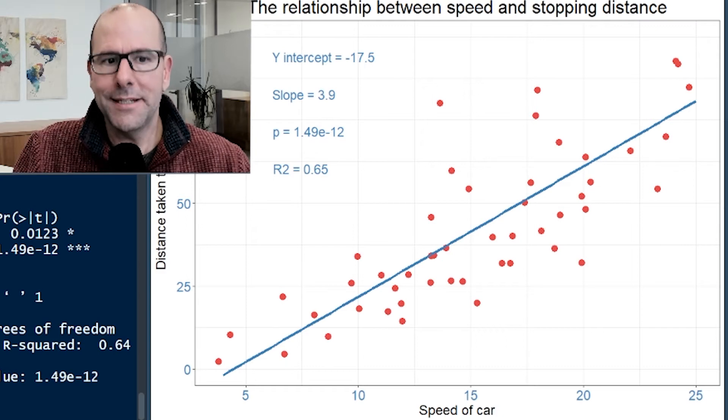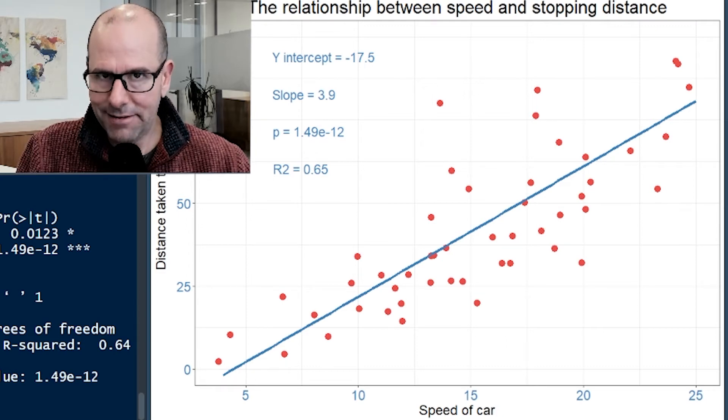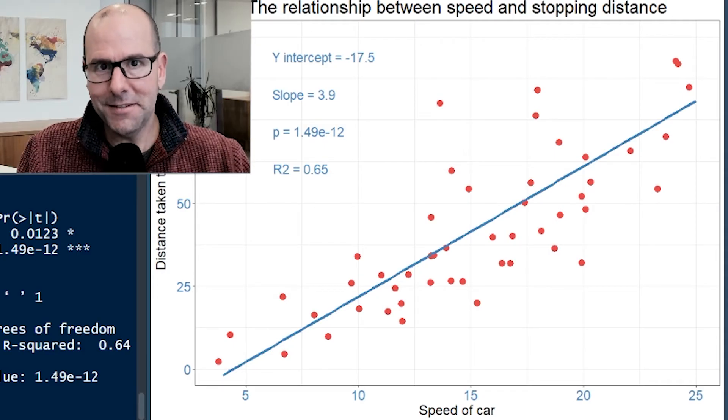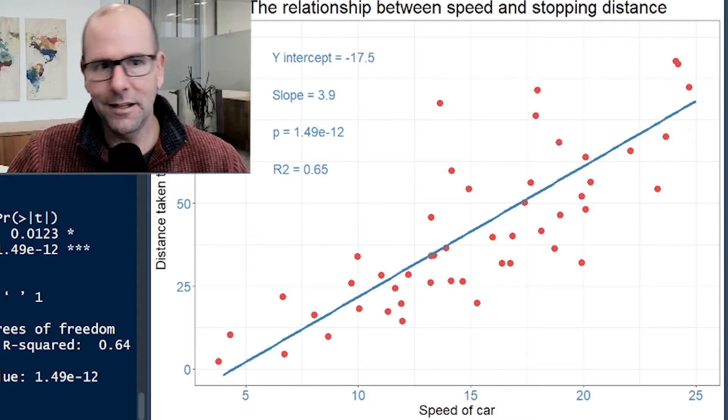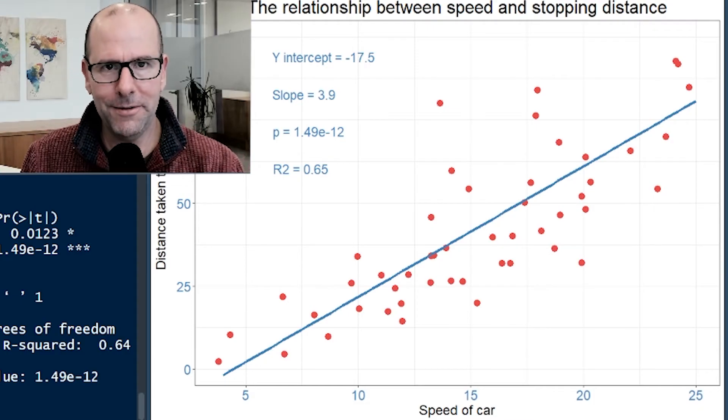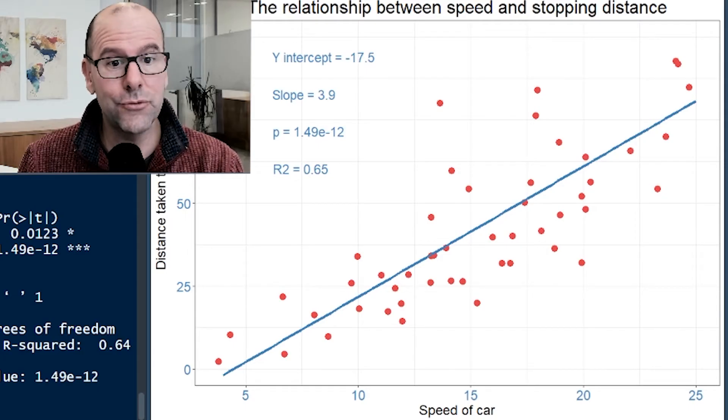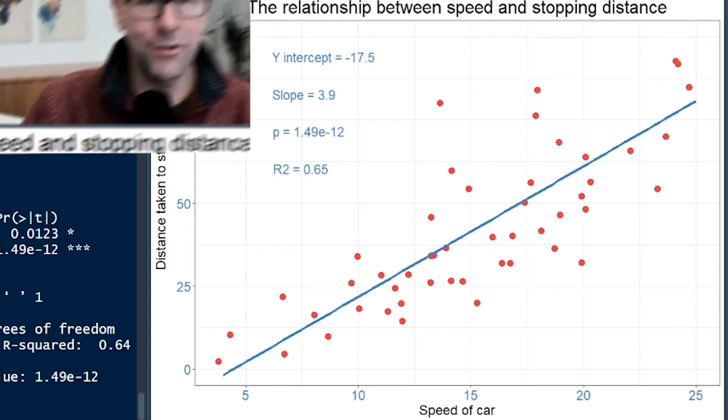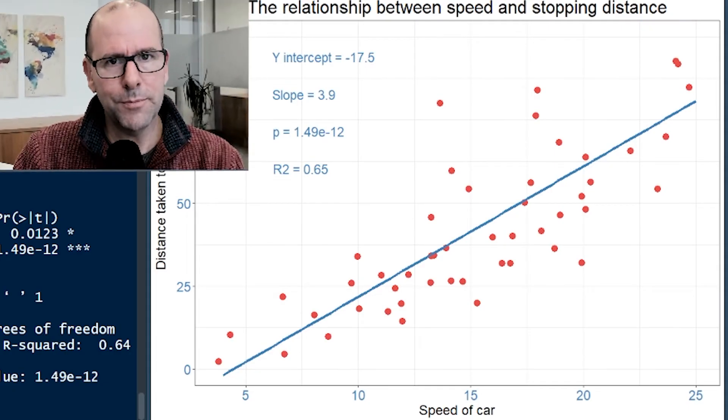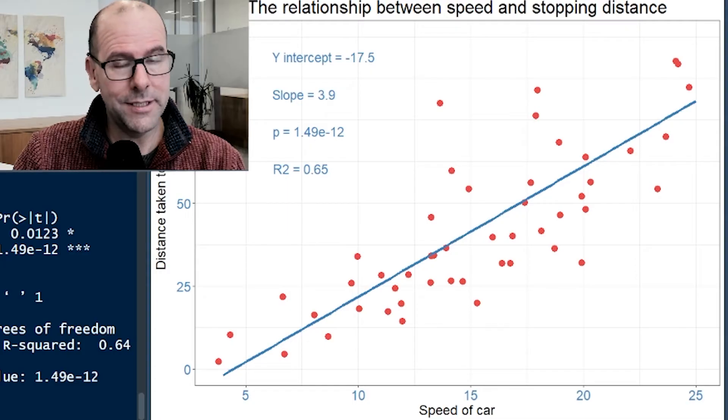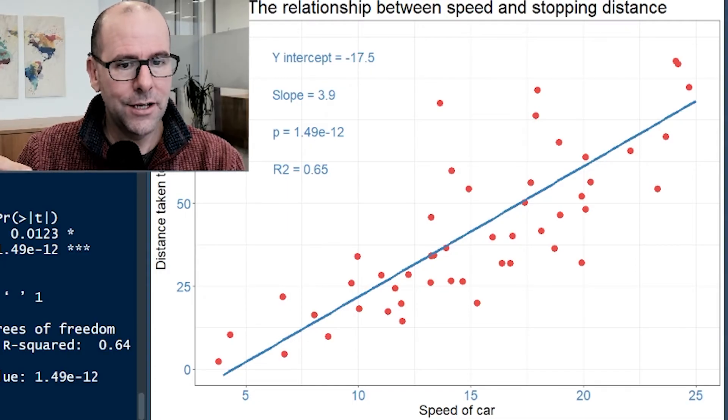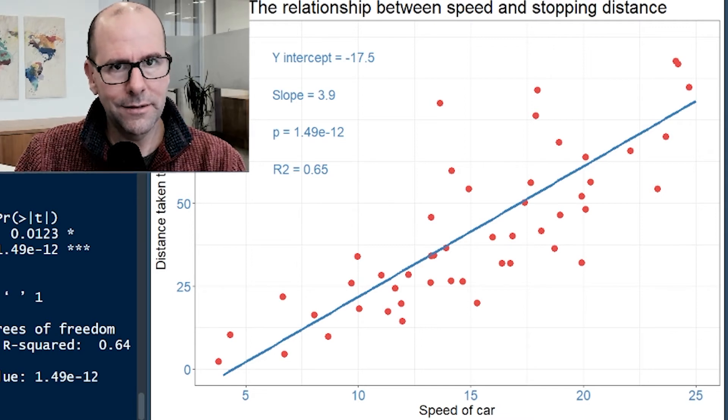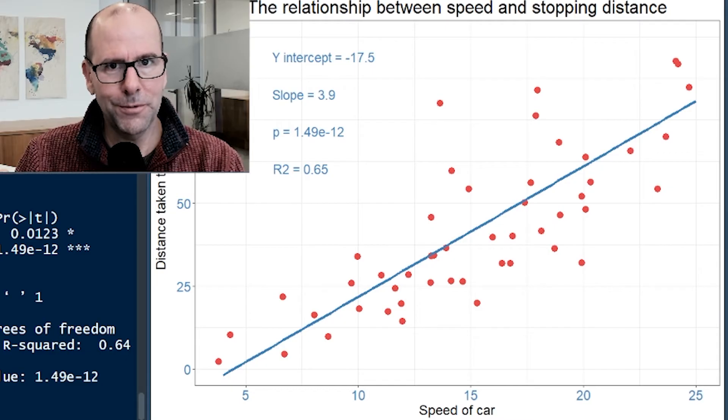If the p-value is less than five percent, the probability of getting a sample with a slope as different from zero as this is less than five percent, then we reject the null and accept the fact that this is real. In this case, the p-value is extremely small: 1.9 times 10 to the power of negative 12. That's an extremely small number, of course less than five percent. So we can reject the null and accept that not only do we have a slope, but this is statistically significant.